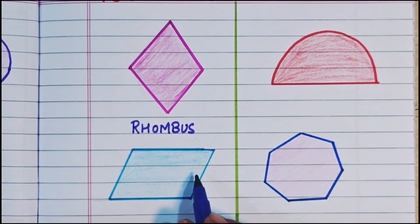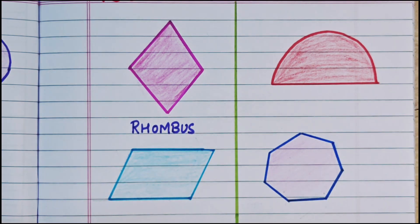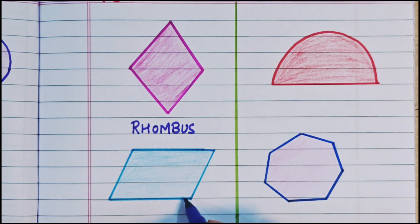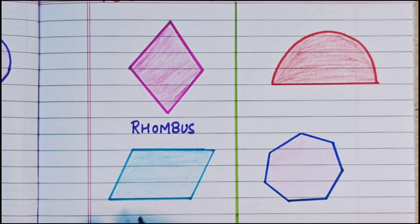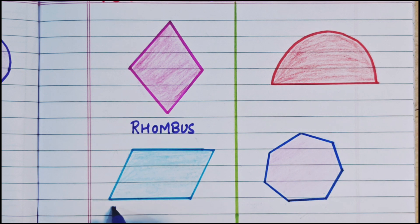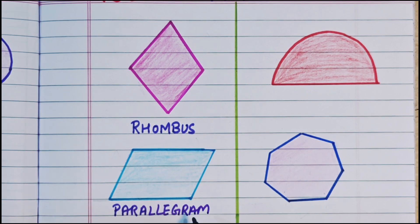Next here we have 4 sides, and 2 sides are parallel to each other. See, these both sides are parallel, and these both sides are parallel. So this is a parallelogram. P-A-R-A-L-L-E-L-O-G-R-A-M. This is a parallelogram.